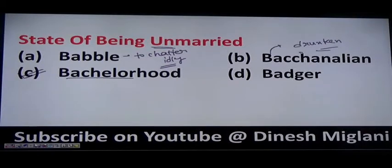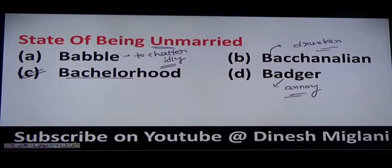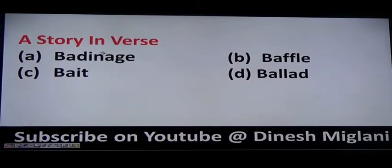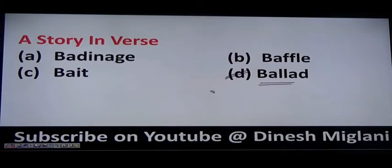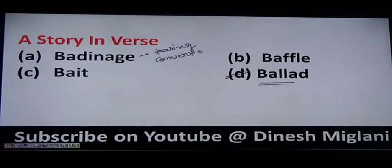Next is badger, B-A-D-G-E-R. Badger means to annoy someone. So: bachelorhood is state of being unmarried; babble is to speak or chatter idly, like a chatterbox; badger is to annoy — tang karna. Next, a story in verse is said to be a ballad, B-A-L-L-A-D — a story told in verse form. Then we have badinage — badinage is basically a teasing conversation.